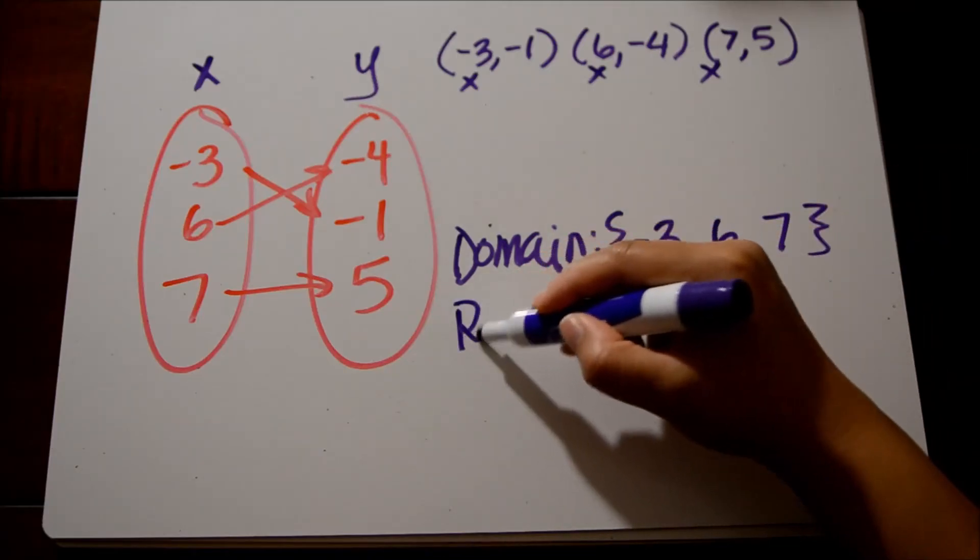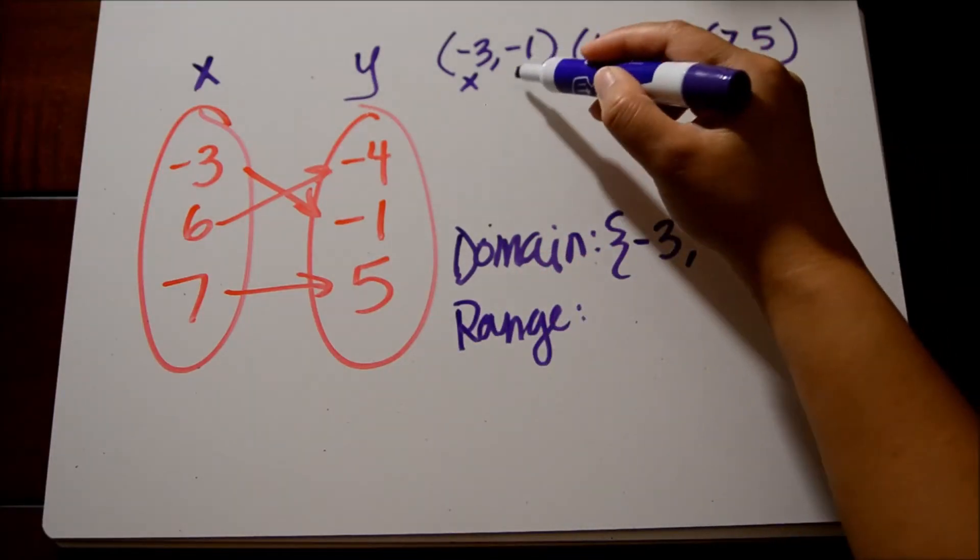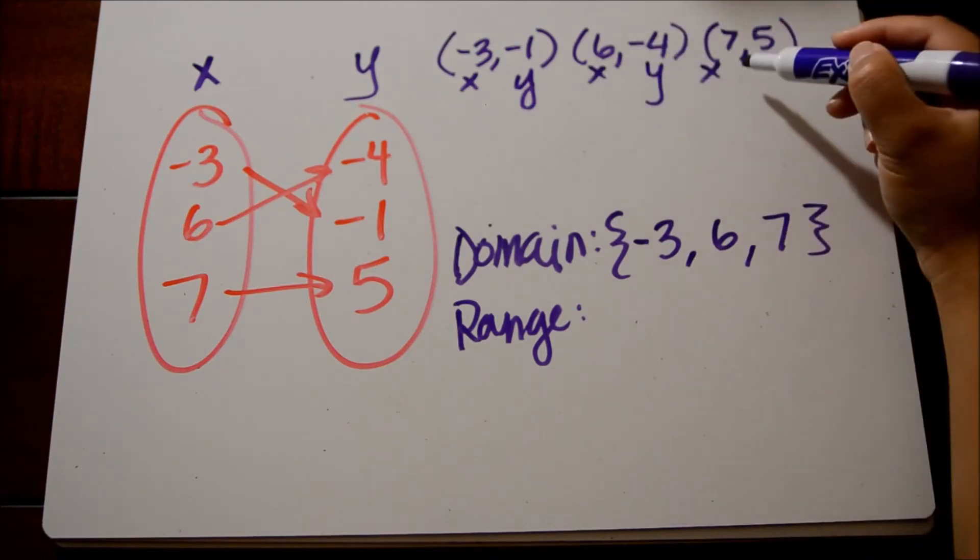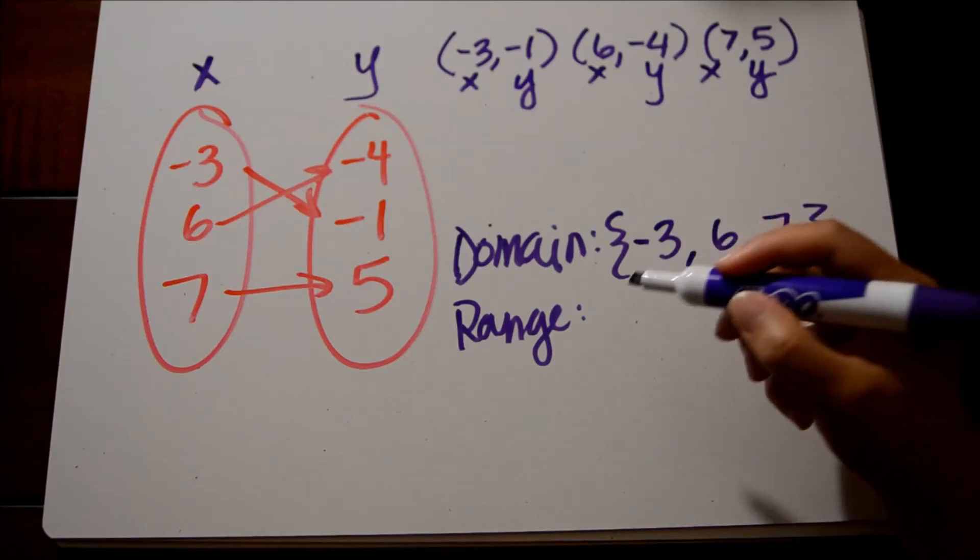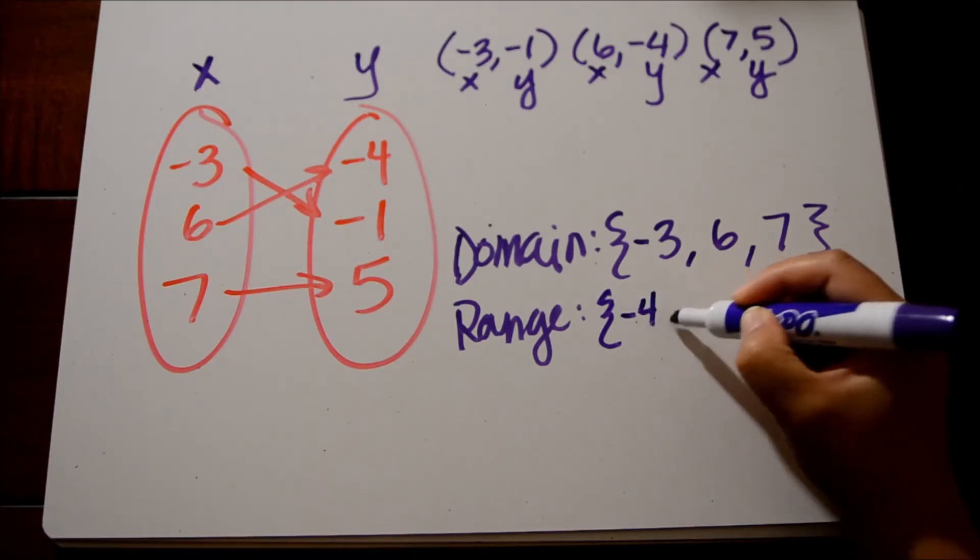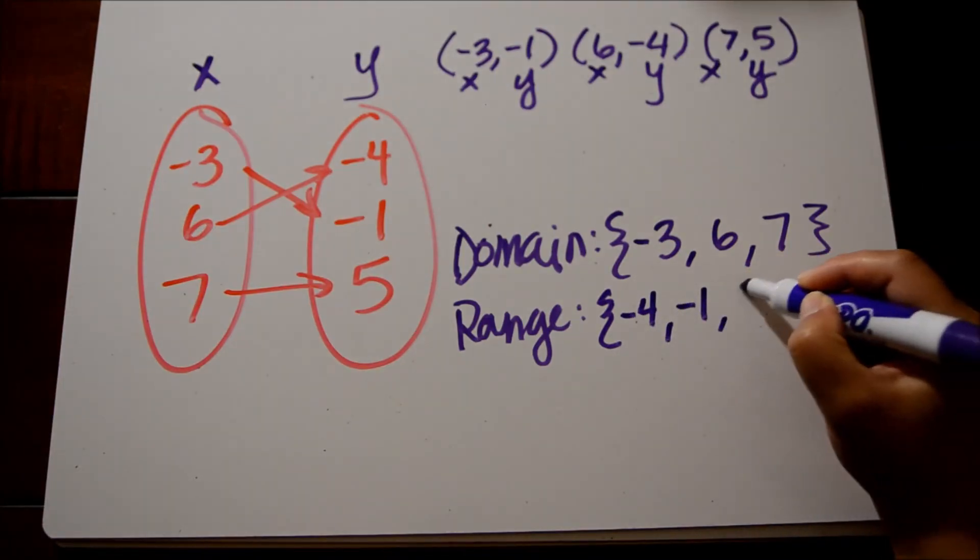Our range describes our y values of these ordered pairs, so let's list out our y values here. In order from least to greatest, our least will be negative 4, negative 1, and then 5.